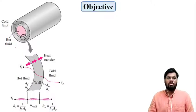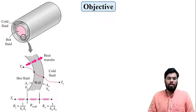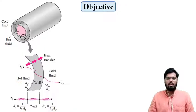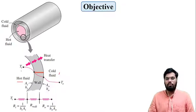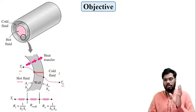In this heat exchanger, this is a parallel flow heat exchanger. Hot fluid flows through this inner pipe, surrounded by another pipe in which cold fluid is flowing. Between the hot fluid and cold fluid there is a solid cylindrical wall. If we zoom in on this portion, on the internal side there is hot fluid, then there is a thickness of wall, and on the outer surface there is cold fluid. Heat will flow from the higher temperature Ti (hot fluid) to the lower temperature To (cold fluid).